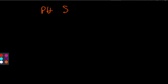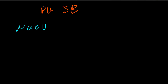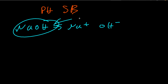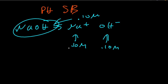Now let's look at how to find the pH of a strong base. Let's say the strong base is NaOH. In solution it breaks up completely into Na⁺ and OH⁻. Let's say the concentration is 0.10 M. That makes the OH⁻ concentration also 0.10 M, because the coefficients are all the same.